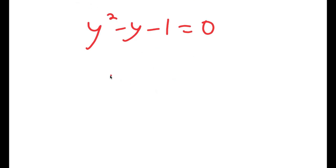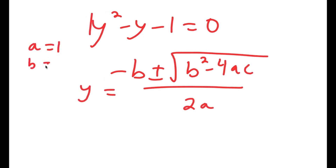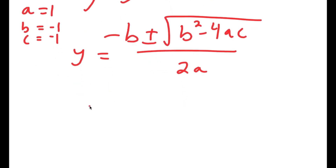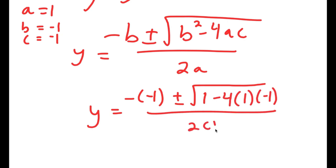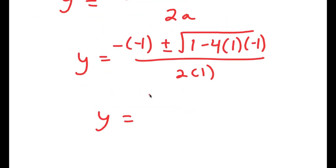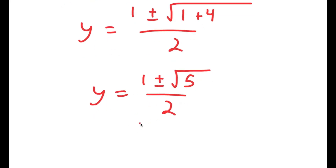To solve this equation I'll use the quadratic formula: negative b plus or minus the square root of b squared minus 4ac, all over 2a. In this case a is 1, b is negative 1, and c is negative 1. So y equals negative of negative 1, plus or minus the square root of negative 1 squared minus 4 times 1 times negative 1, all over 2 times 1. This equals 1 plus or minus the square root of 1 plus 4 over 2, which equals 1 plus or minus the square root of 5 over 2.